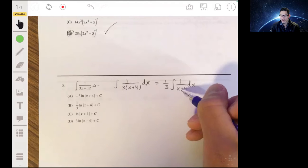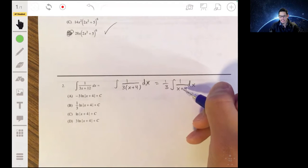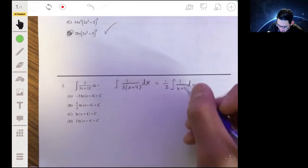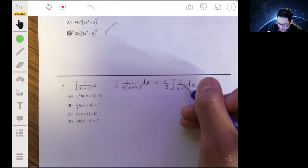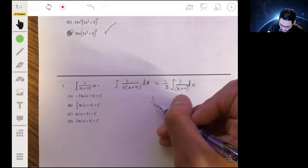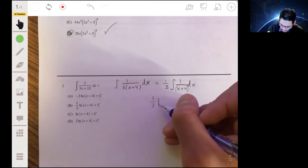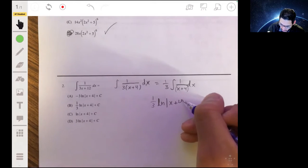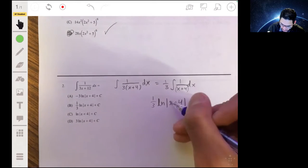Whenever you have one over x plus any number, like x plus 10, x minus 17, this will just automatically be the natural log of whatever you have in the denominator. So this will just be one third times the natural log of the absolute value of x plus four. And of course, add the constant c.